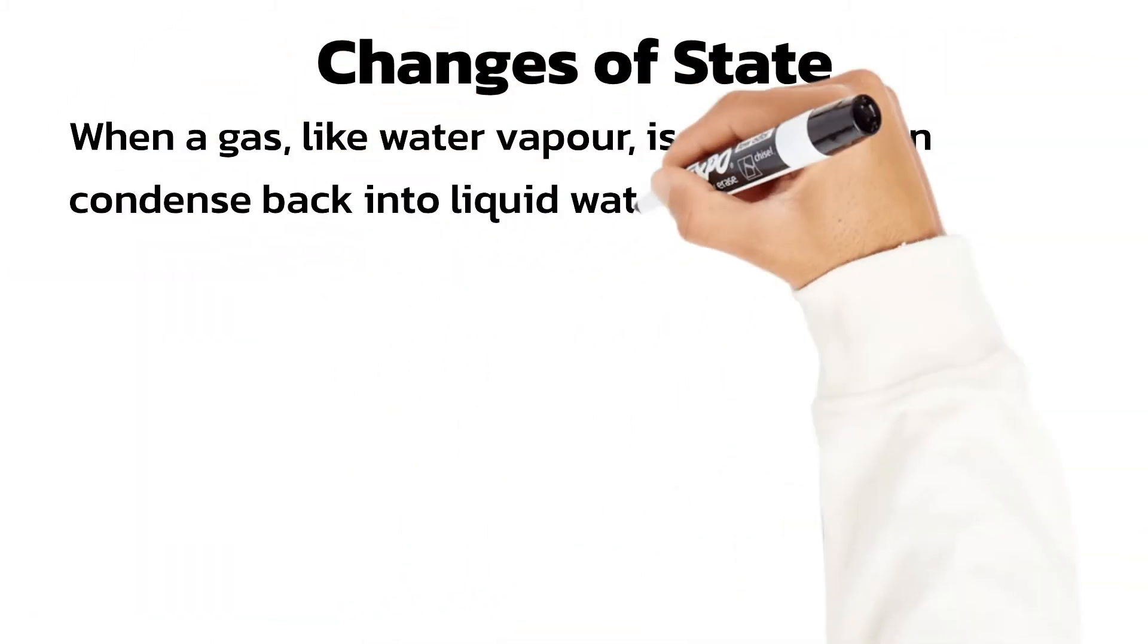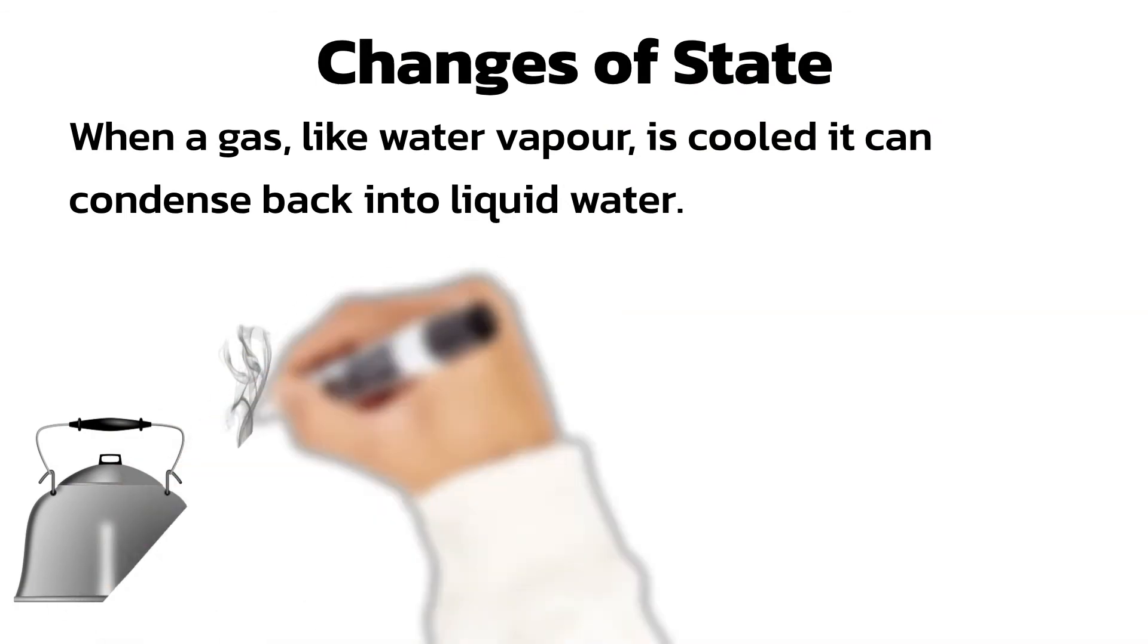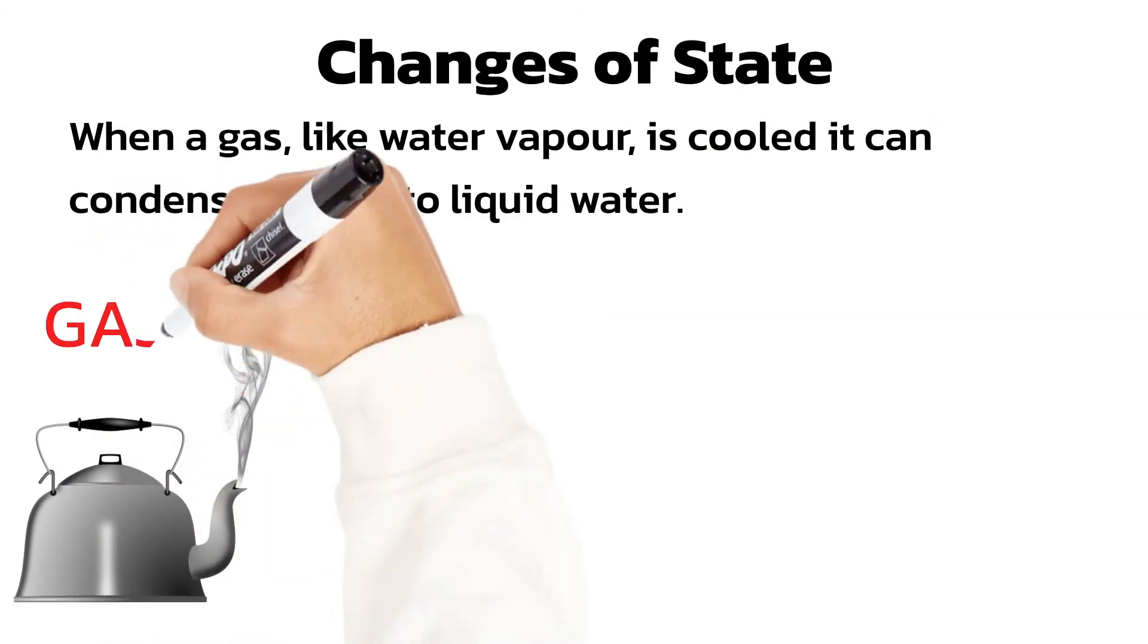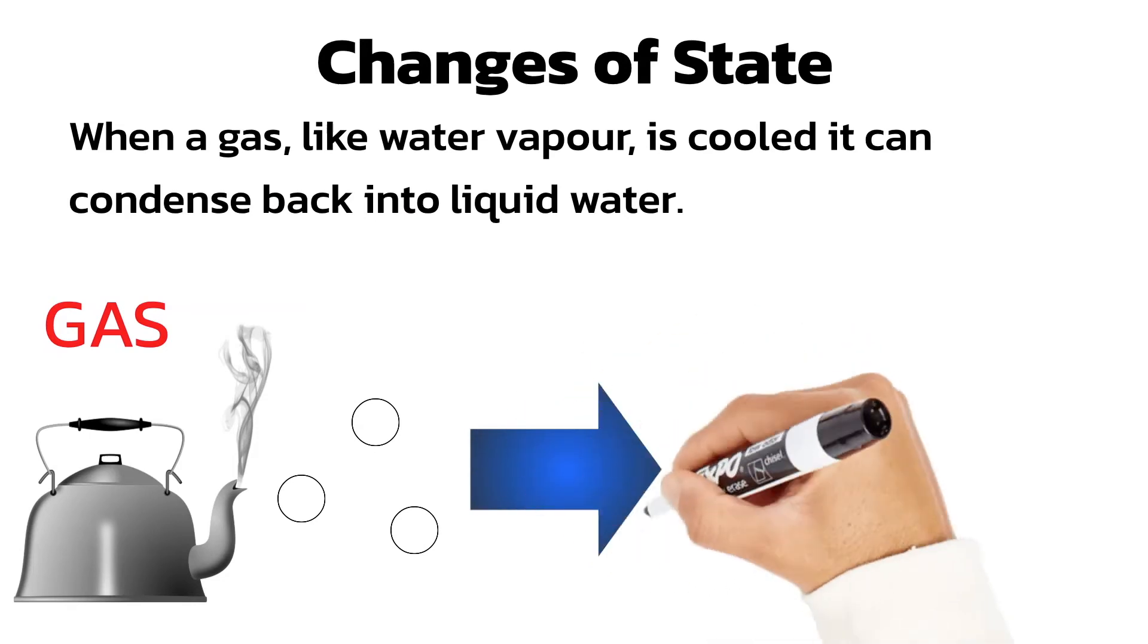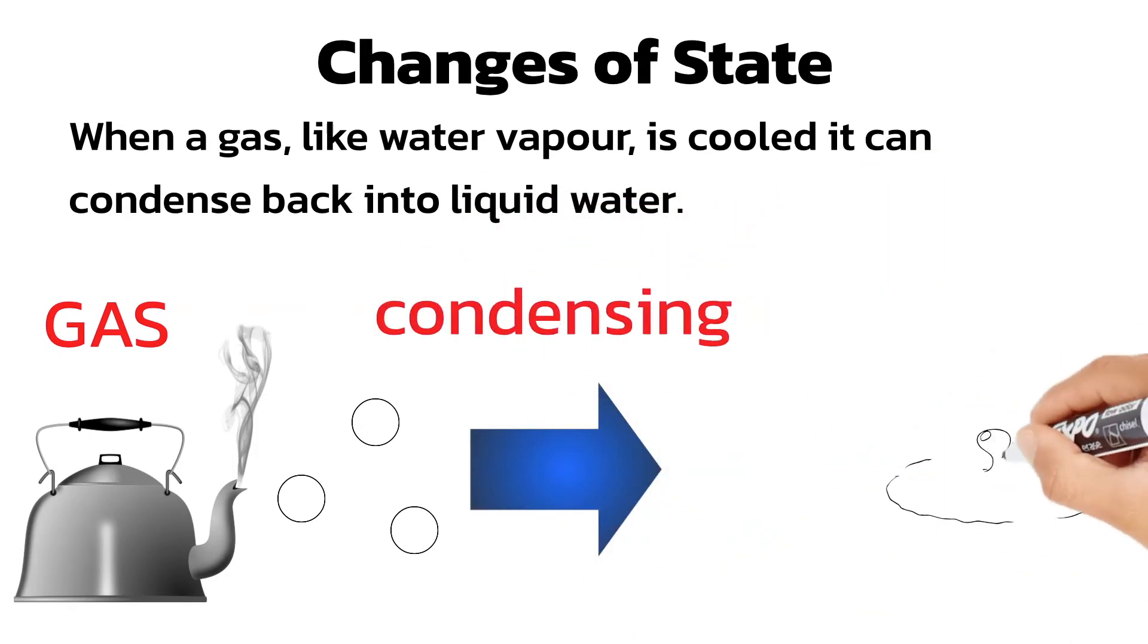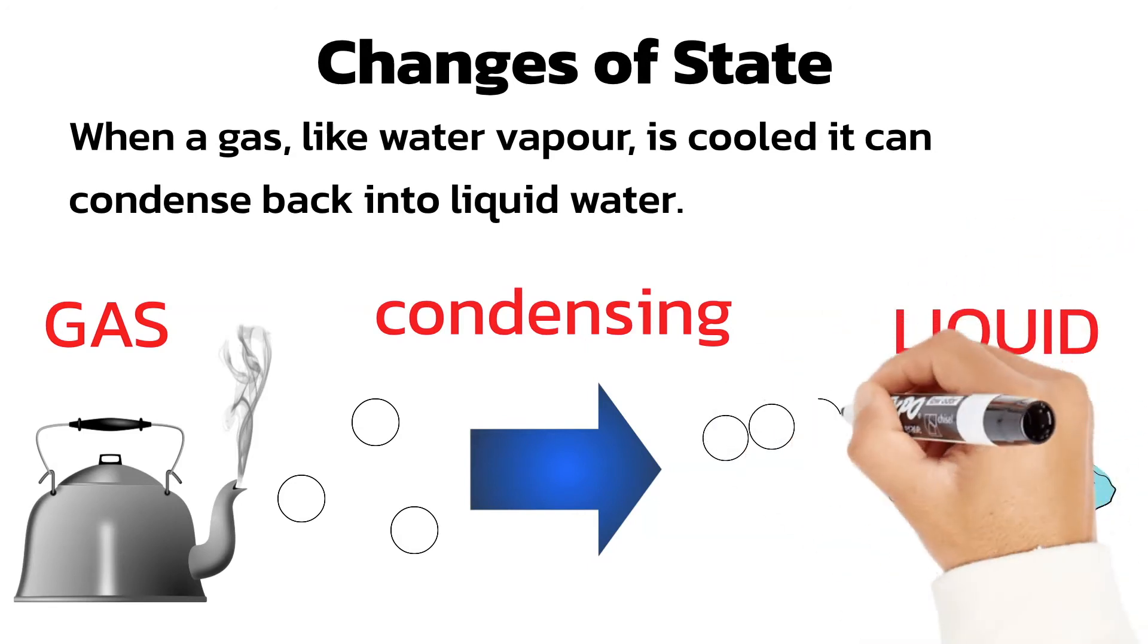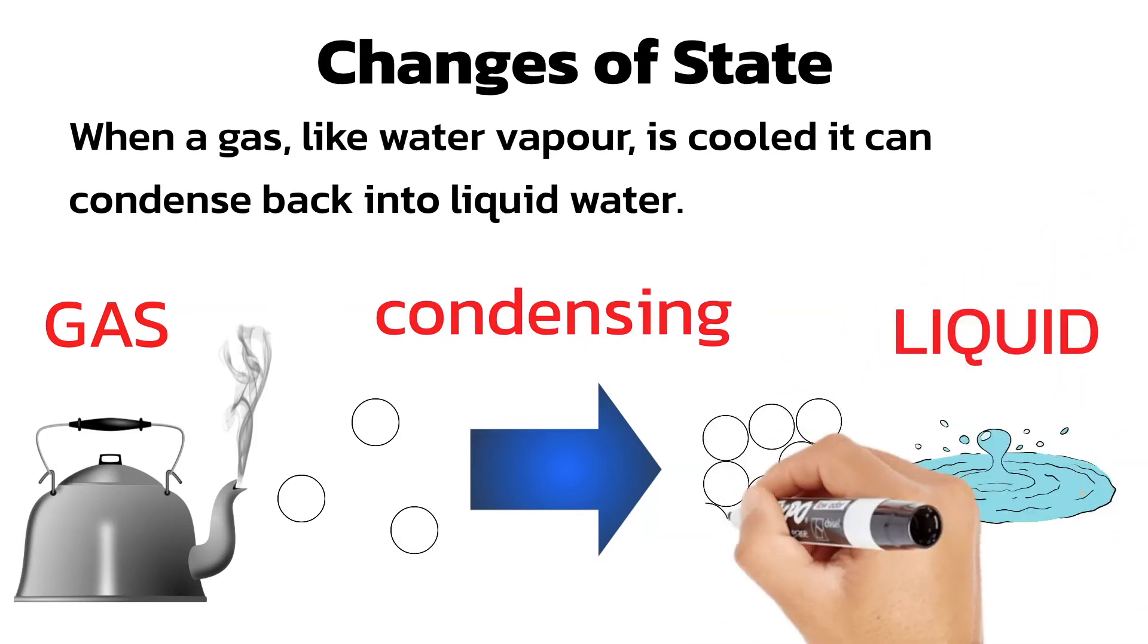When gases lose energy, they cool down and can turn back into liquids. This is called condensing or condensation. You will have seen condensation on your windows on a cold day. The water vapor in the air cools when it touches the cold window and loses energy. This turns it back into liquid water. As the particles in the gas lose energy, they slow down, get closer to each other and they start bonding back together into a liquid.